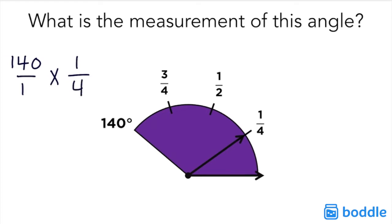Our next step is to multiply. We can do this by multiplying the numerators together and the denominators together. 140 times 1 equals 140.